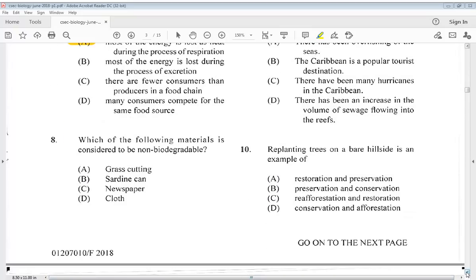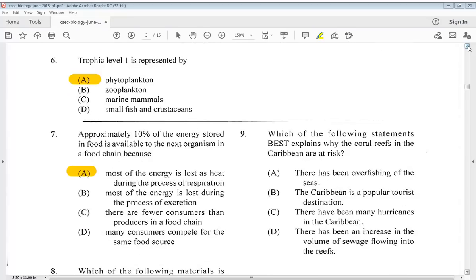Eight says, which of the following materials is considered to be non-biodegradable? This is an easy one. We know it is B, sardine can. Nine, which of the following statements best explains why the coral reefs in the Caribbean are at risk? The answer would be D, there has been an increase in the volume of sewage flowing into the reefs.